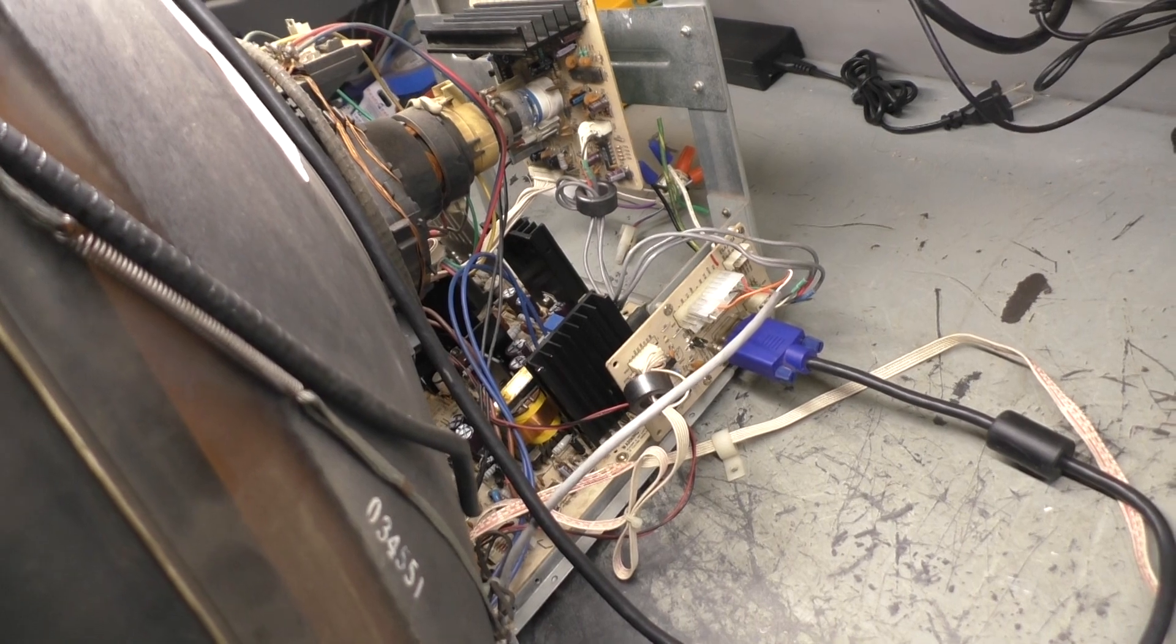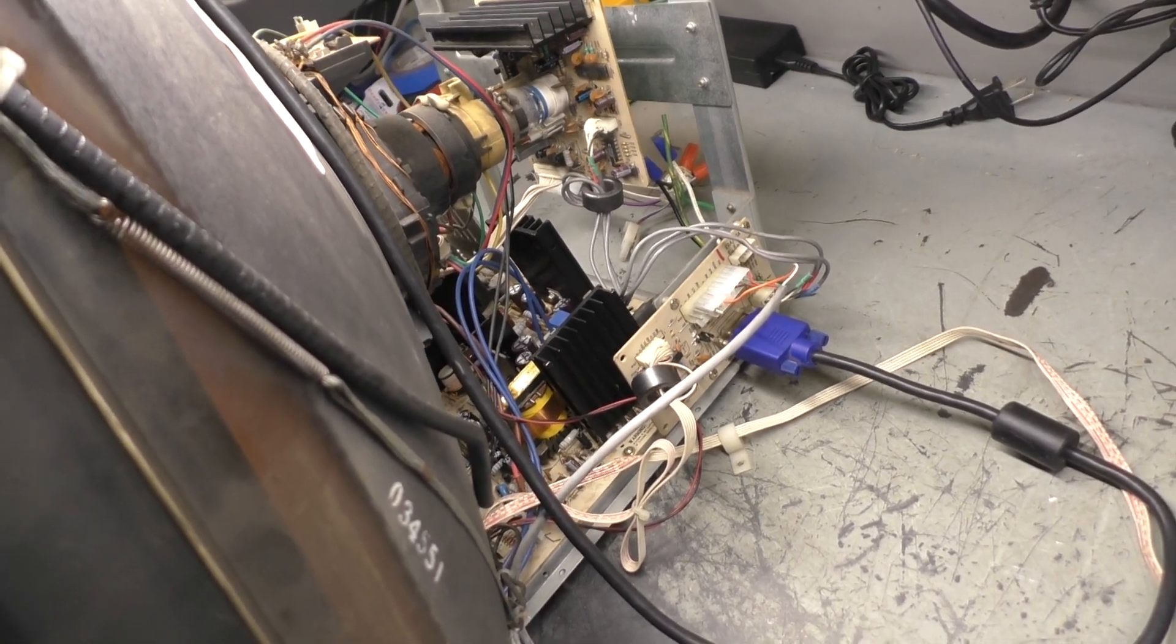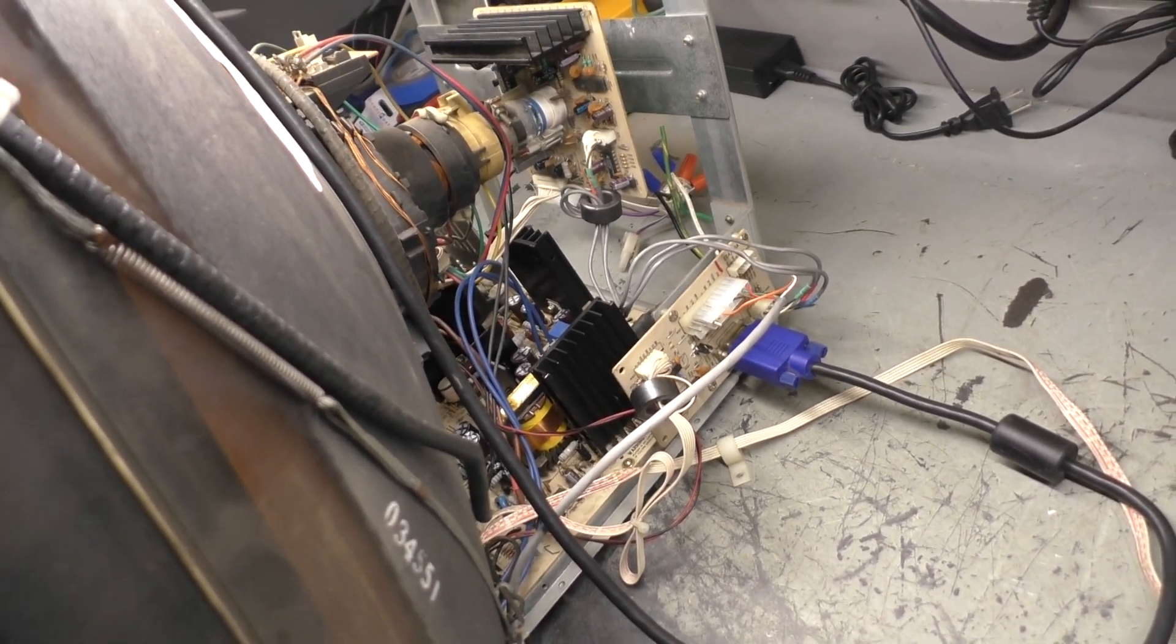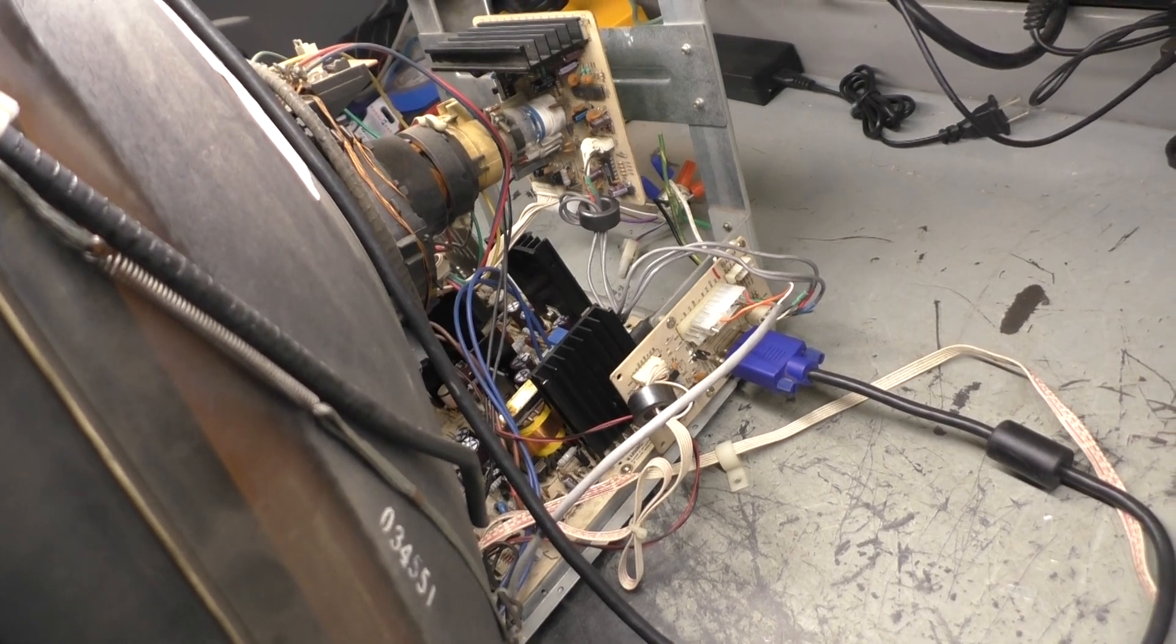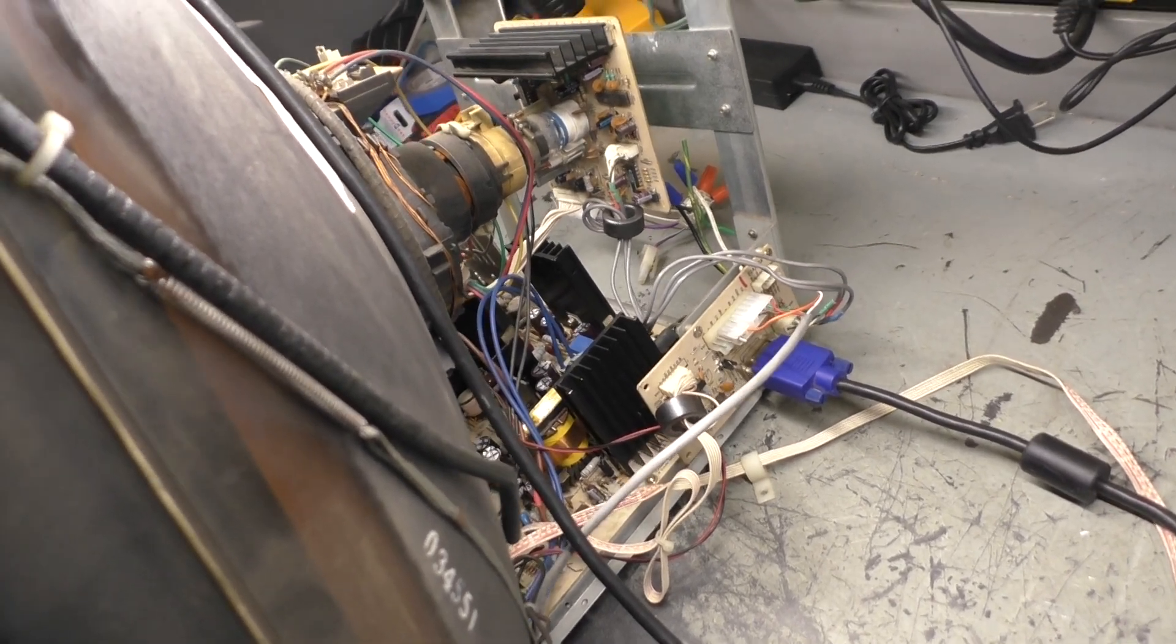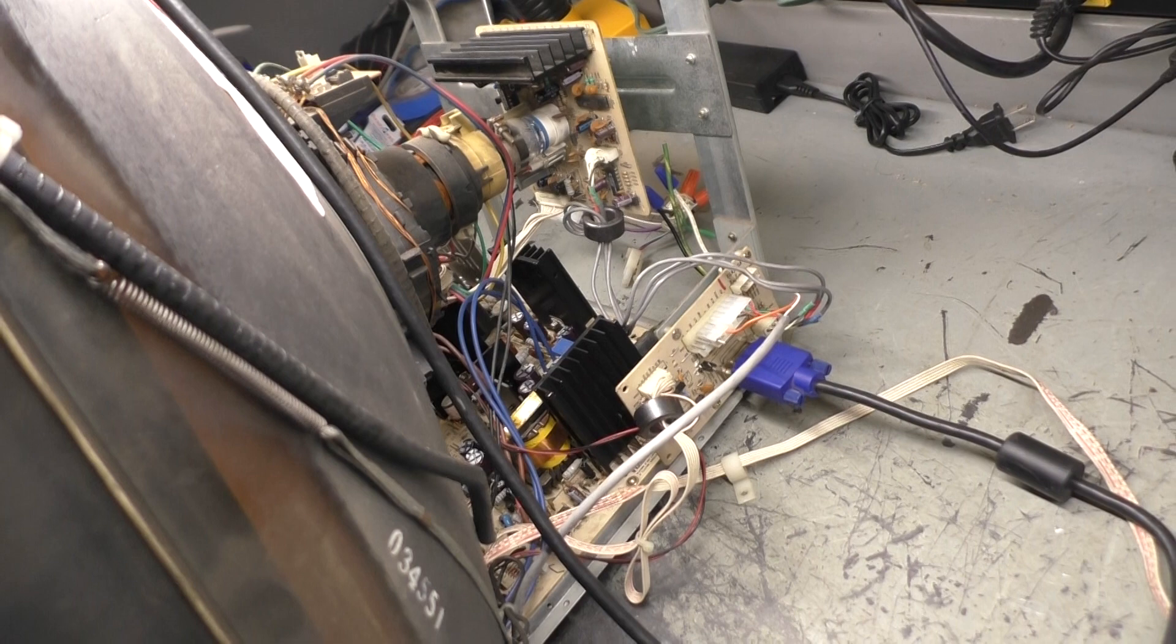So like racing games, Gauntlet Legends, NFL Blitz, any of those games that use 27-inch monitors that need either VGA or EGA, I want to be able to have a couple extra spares for the arcade. So I found this one. He said, here, sure, take it.